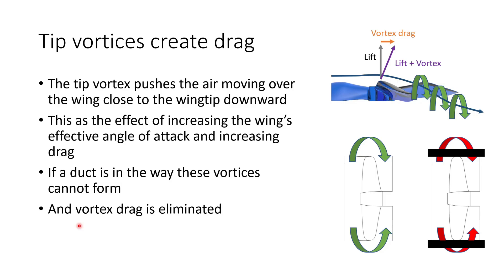Wingtip vortices aren't a good thing for aeroplanes or propellers because they create drag. The wingtip vortex changes the direction of airflow over the wing close to the wingtip, causing the air to be pushed downwards near the tip. This increases the effective angle of attack of the aerofoil and increases drag. Without the vortex, the lift vector is oriented vertically upwards, but with the wingtip vortex effect causing the air to swoop downward, the lift vector rotates slightly backwards, creating a component called vortex drag — not doing anything useful and causing inefficiency.